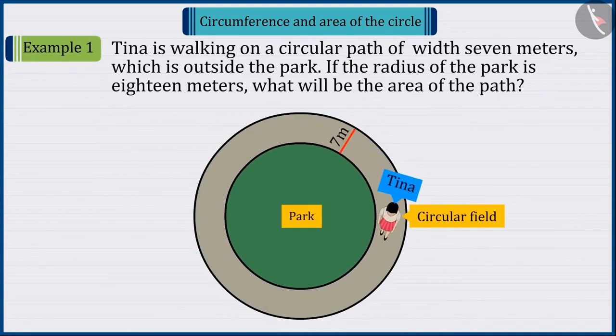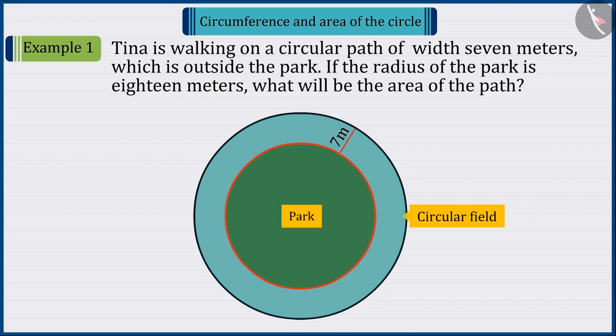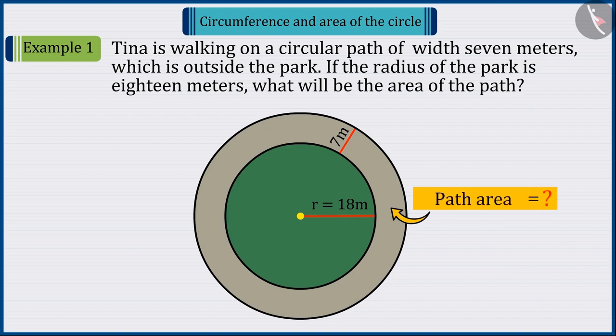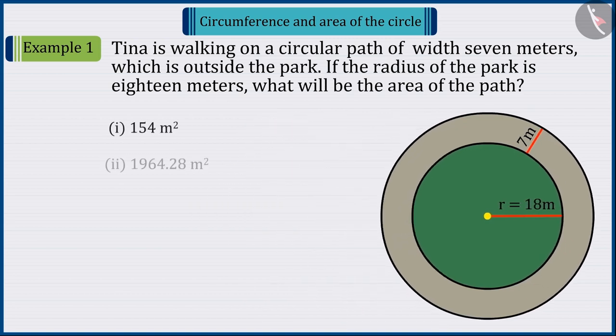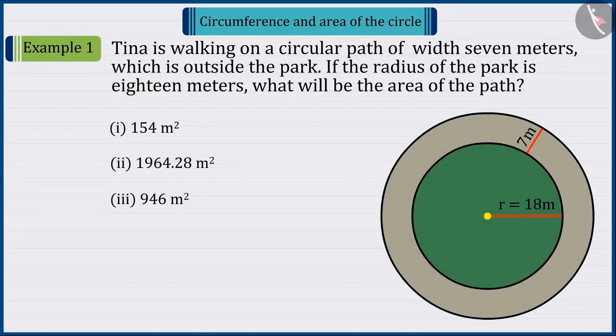Tina is walking on a circular path of 7 meters, which is outside this circular park. If the radius of the park is 18 meters, what will be the area of the path? Which of the following answer is correct? Pause the video to solve the question and then match your answer.